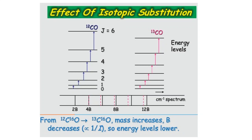B is inversely proportional to I, and I is related to the reduced mass. So the energy levels of ¹³CO are also slightly lower than those of ¹²CO. The energy level spacing, which depends on B, is therefore smaller for the heavier isotopologue.